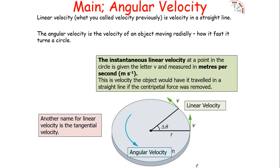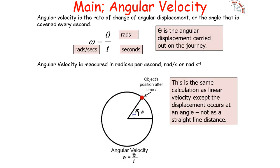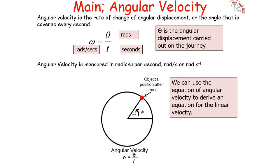The instantaneous linear velocity at a point is given the symbol v and is measured in metres per second — this is the velocity the object would have if it travelled in a straight line with the centripetal force removed. The angular velocity is the angle through which the radius turns in one second; it is given the symbol ω and is measured in radians per second. Angular velocity is the rate of change of angular displacement, so ω = θ/t, where θ is in radians and t is in seconds. This is the same as the linear velocity calculation except displacement is an angle rather than a straight-line distance.